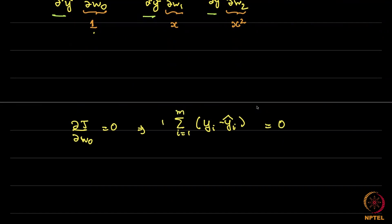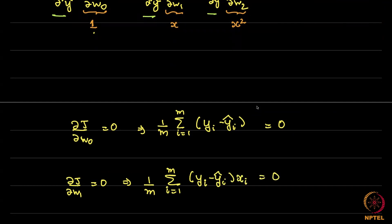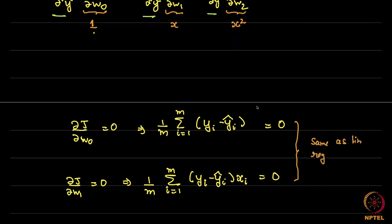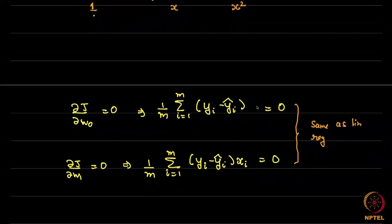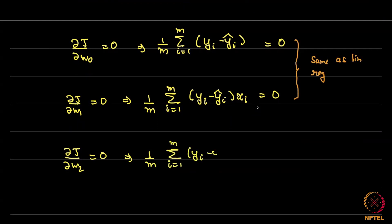Now looking at these three equations, we can rewrite them. Setting ∂J/∂w₀ = 0 means (1/m)Σᵢ(yᵢ − ŷᵢ)·1 = 0. Setting ∂J/∂w₁ = 0 means (1/m)Σᵢ(yᵢ − ŷᵢ)·xᵢ = 0. You might remember these two equations are the same as the linear regression equations — nothing really changes except that ŷ now has a quadratic term, which affects the equations slightly.